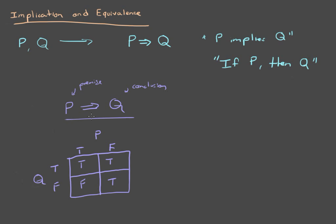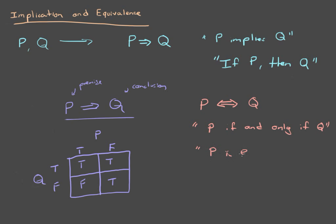Anyway, so that's implication. The other thing is equivalence, and it's just kind of built off of implication. Equivalence is the statement P if and only if Q — written with the double arrow symbol. We read that as 'P if and only if Q,' or sometimes 'P is equivalent to Q.'